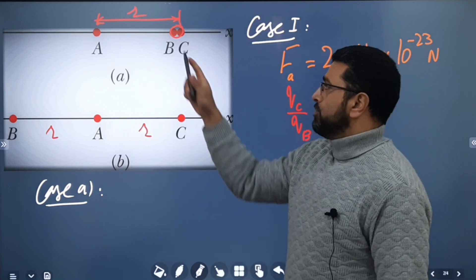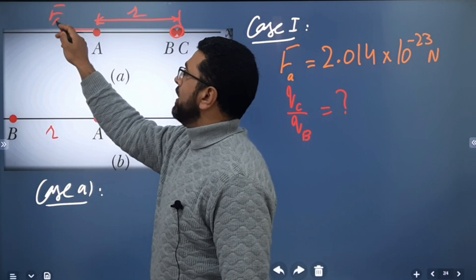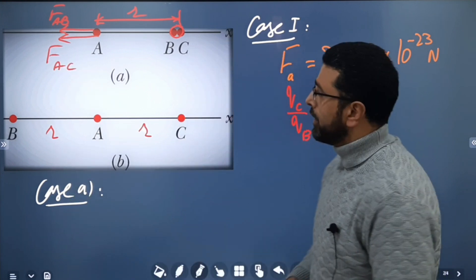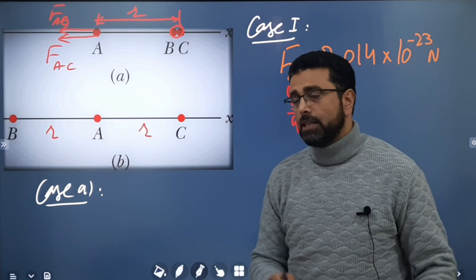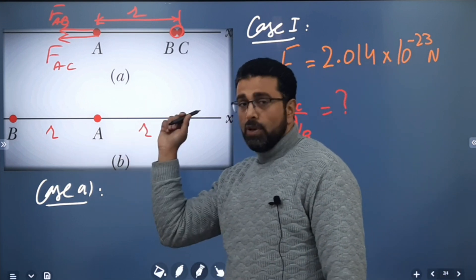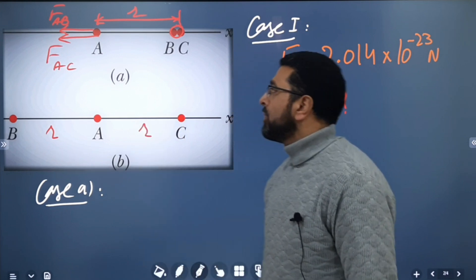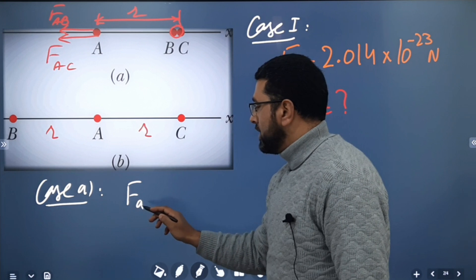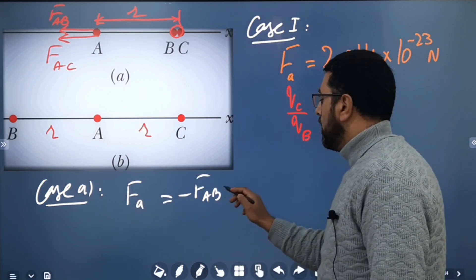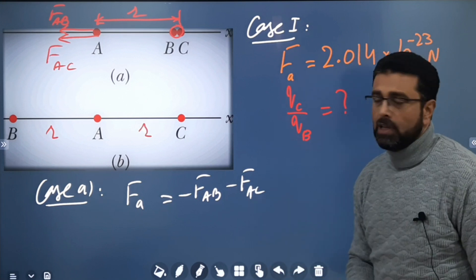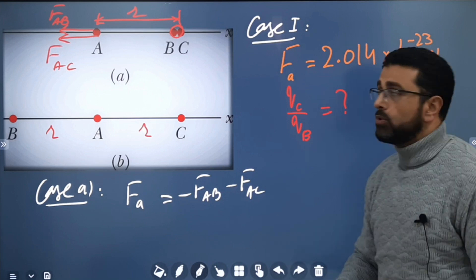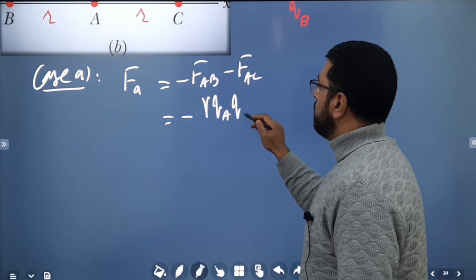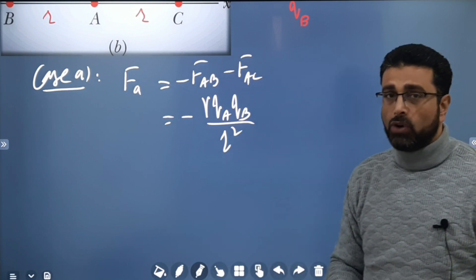In case A, particle A experiences two forces: B repels it — I'll call this F_AB — and C also repels it — I'll call this F_AC. Both forces are in the negative direction. Taking signs into account, the net force on A in case A is: F_A = −F_AB − F_AC.